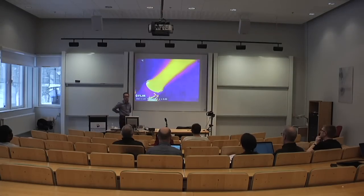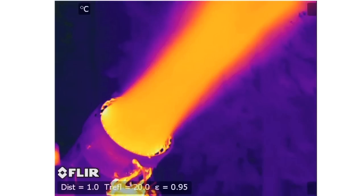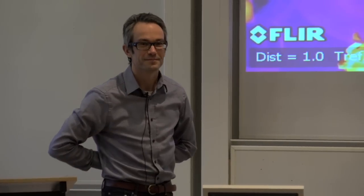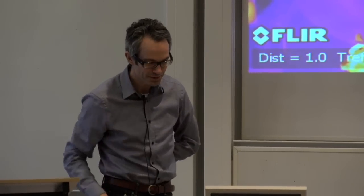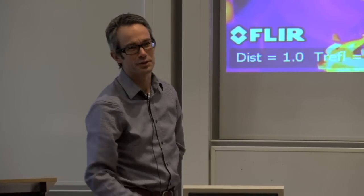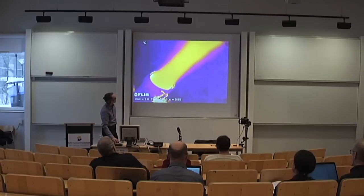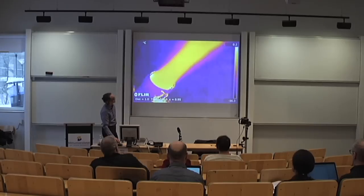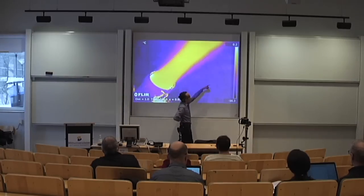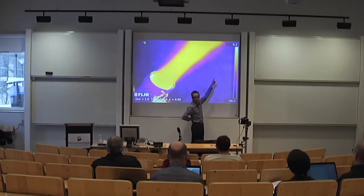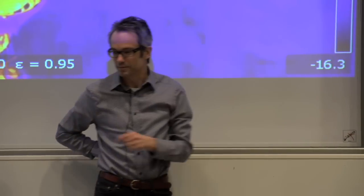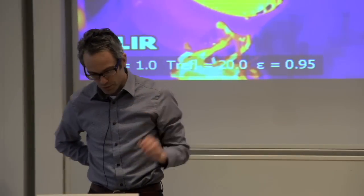But first, let's start with this — what is it? This is a thermal image of something. People usually say things like, 'Oh, it looks very hot, it must be a jet engine.' But if we get the temperature scale, the temperatures in this image range from 0.2 degrees Celsius to minus 16.3 — so it's obviously not a jet engine.